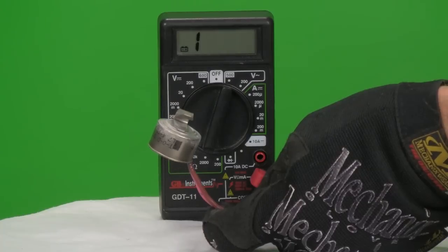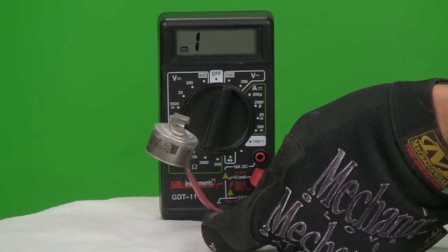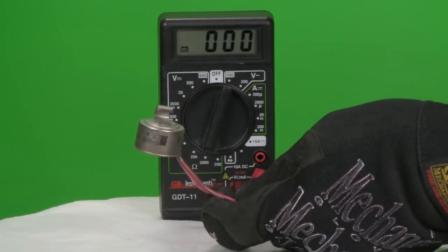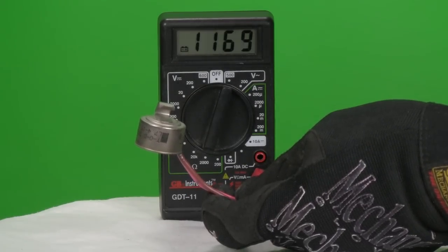This bi-metal thermostat is used in a freezer's defrost cycle to sense if the freezer is cold enough to need de-icing. It is normally open and closes when cold to energize the defrost heater.